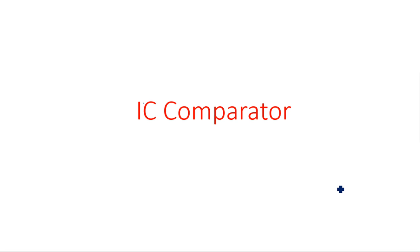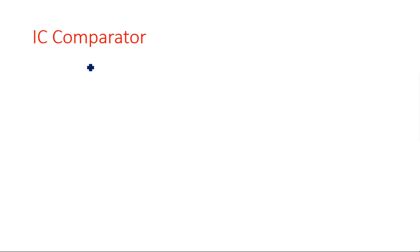Hi everyone, in this video I am going to tell you about an IC comparator. In the previous video I gave you an introduction of 1-bit comparator and 2-bit comparator. A comparator is nothing but a digital circuit which is used to compare two incoming bits. A 1-bit comparator compares two one-bit values and gives three possible outcomes: A greater than B, A less than B, and A equal to B.